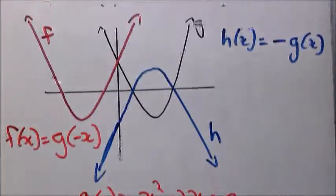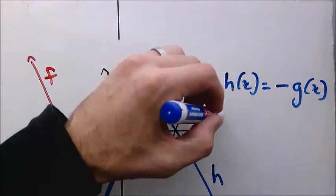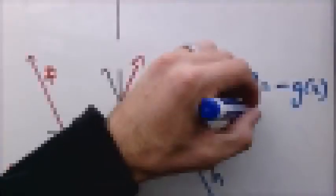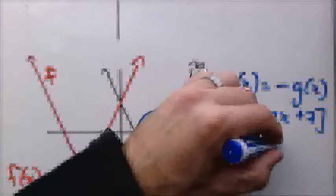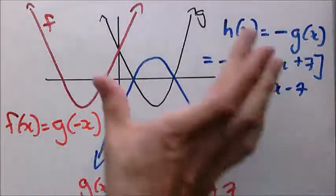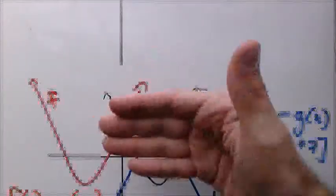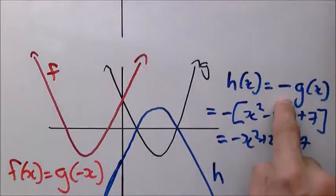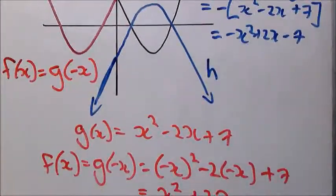For h(x), whatever g(x) was becomes a negative. So if g(x) was x² - 2x + 7, then h(x) becomes -x² + 2x - 7. The y-intercept is now negative and the concavity is now a frowny face because of the negative a. To recap: reflection around the x-axis makes the whole function negative; reflection around the y-axis makes x negative — you substitute and work it out.